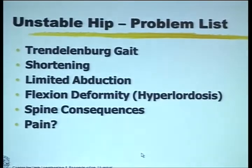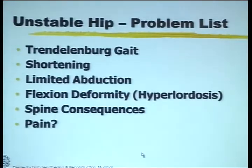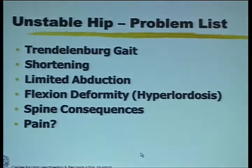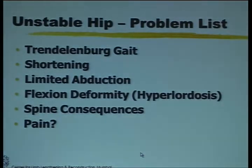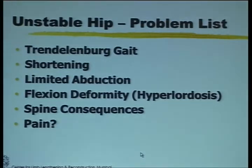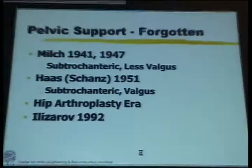In these unstable hips, they have various problems like Trendelenburg gait, they have obviously shortening, their abduction is limited and as a consequence probably of some amount of flexion deformity at the hip, they develop hyperlordosis with ultimate consequences on the spine.